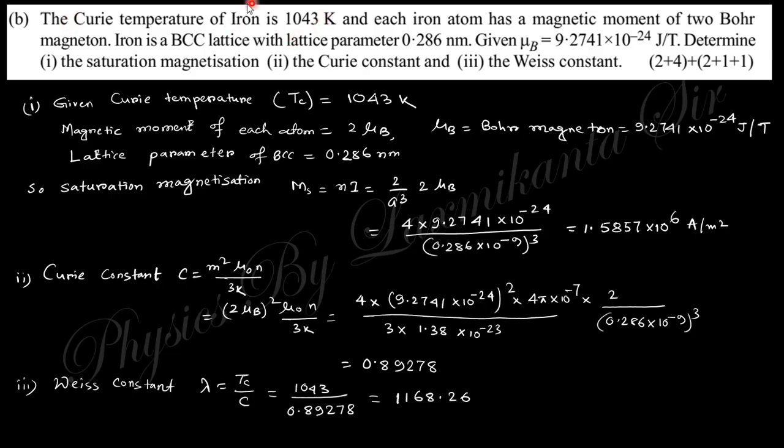The next question says the Curie temperature of iron is given, and the magnetic moment is 2 Bohr magnetons, that is 2 mu_B. It's a BCC lattice, so within a unit cell there are two atoms present. Lattice parameter is given here, mu value is given here. Determine the saturation magnetization, which is n times i. N is the number of molecules per unit volume, and i is 2 mu_B. Finally, we obtain this expression.